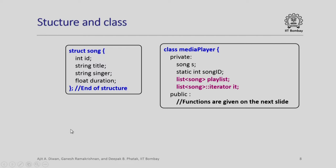Next, we start looking at the details of the program. We begin by defining the structure required for songs and the class for media player. The structure is very simple — it has an ID, title, singer, and duration. The class media player has several private members: first, song itself (S); it will have a static integer value song ID which we will use to increment for subsequent songs added. The list we are declaring, which is the playlist, uses song as the structure as part of that list. Similarly, for the list we also define an iterator IT. The public functions are given in the next slide.